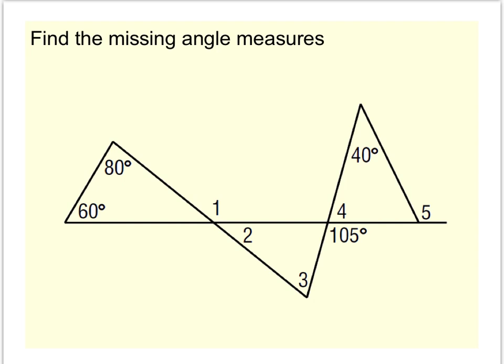First off, let's take a look at angle 1. Angle 1 is an exterior angle to this triangle, this one on the far left. Its remote interior angles are 80 and 60, and so that means angle 1 is the sum of the remote interior angles, or 140 degrees.